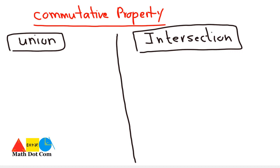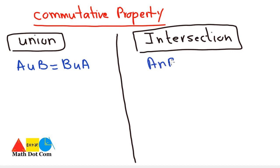For example, if we have two sets A and B, then A union B equals B union A. This is the commutative property of union. For intersection, it is A intersection B equals B intersection A. This means the order doesn't matter whether we put set A first or set B first. Let's see its proof.